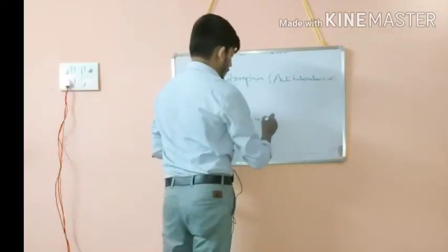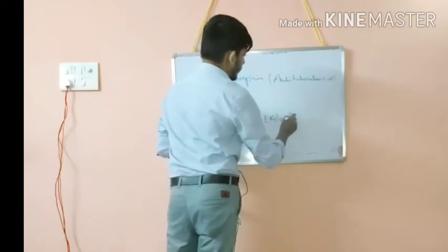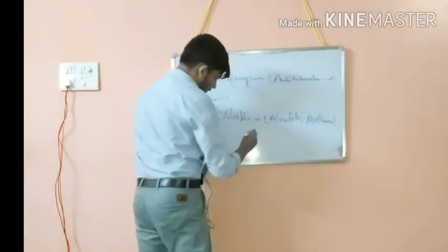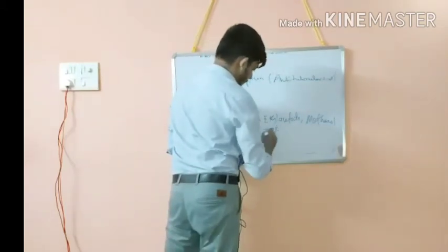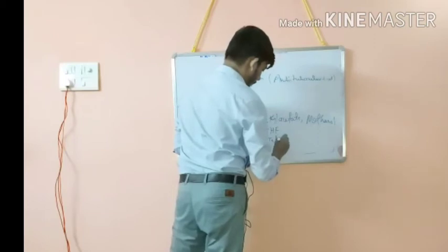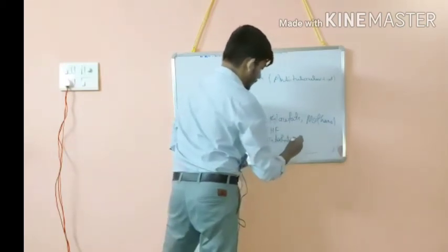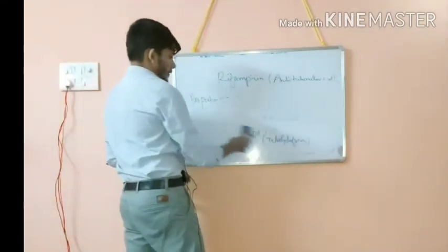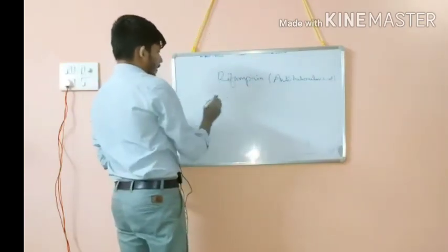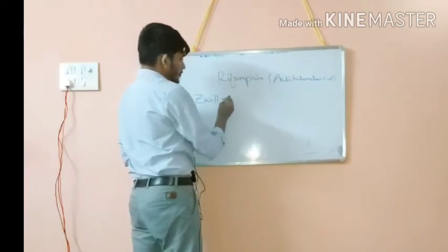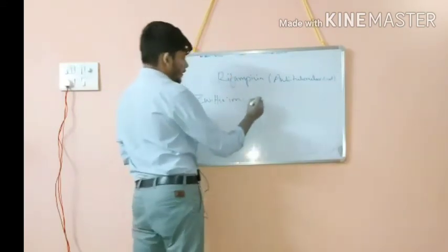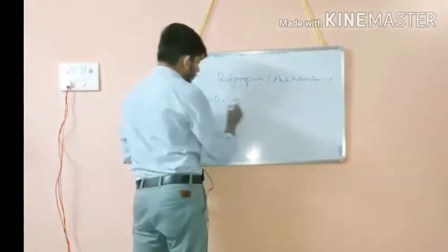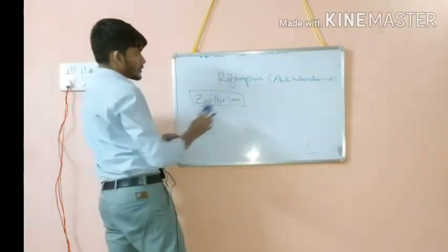Rifampicin is also soluble in ethyl acetate, methanol, and THF — that is tetrahydrofuran. One important thing to remember: it is a zwitterion in nature. A zwitterion is a compound in which two charges — a positive charge and a negative charge — are present at separate positions within the same molecule.